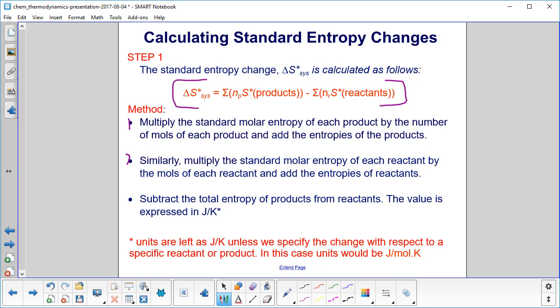Similarly, and this is step two, multiply the standard molar entropy of each reactant—first we did products, now we're doing the reactants—and add those entropies. Then subtract the total entropy of products from reactants. The value is expressed in joules per kelvin. And we're going to leave it like that unless we specify the change with respect to a specific reactant or product. Then the units would be joules per mole kelvin. And just a quick reminder, when we did enthalpy it was kilojoules. Entropy is just joules.